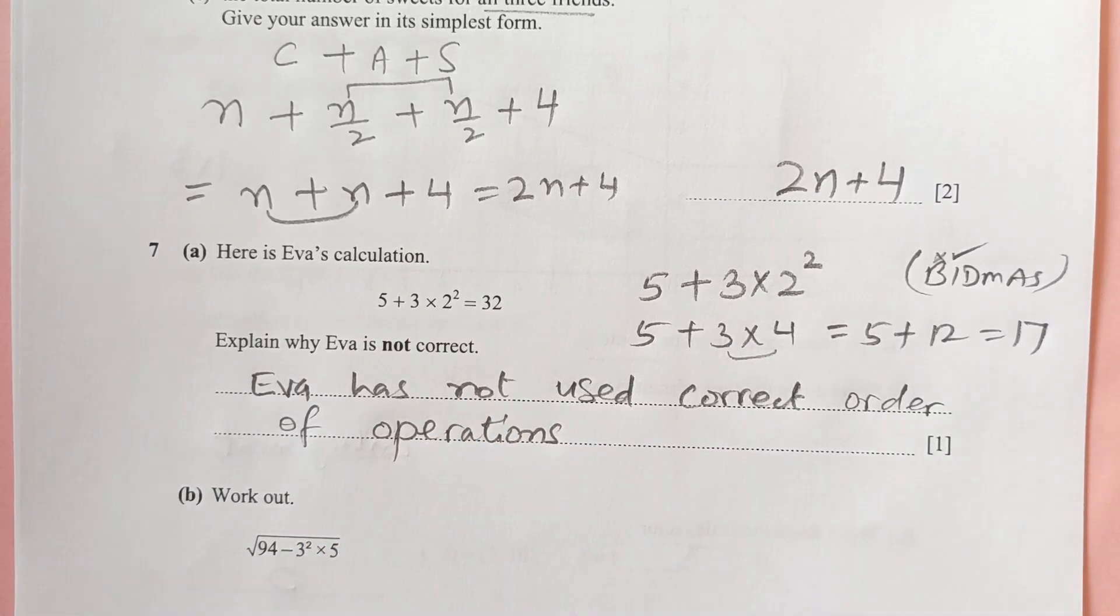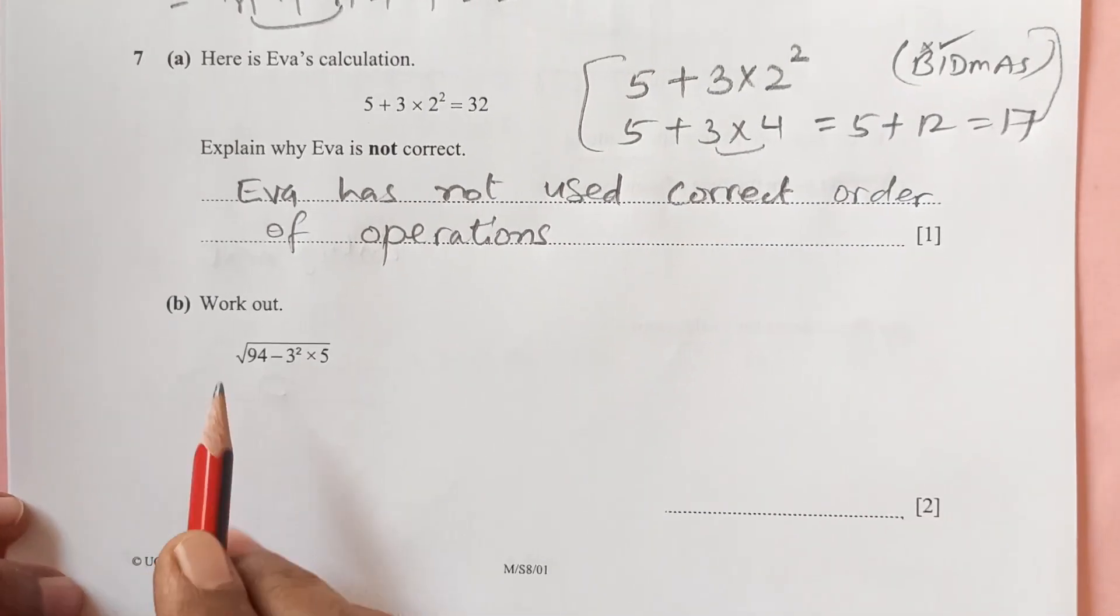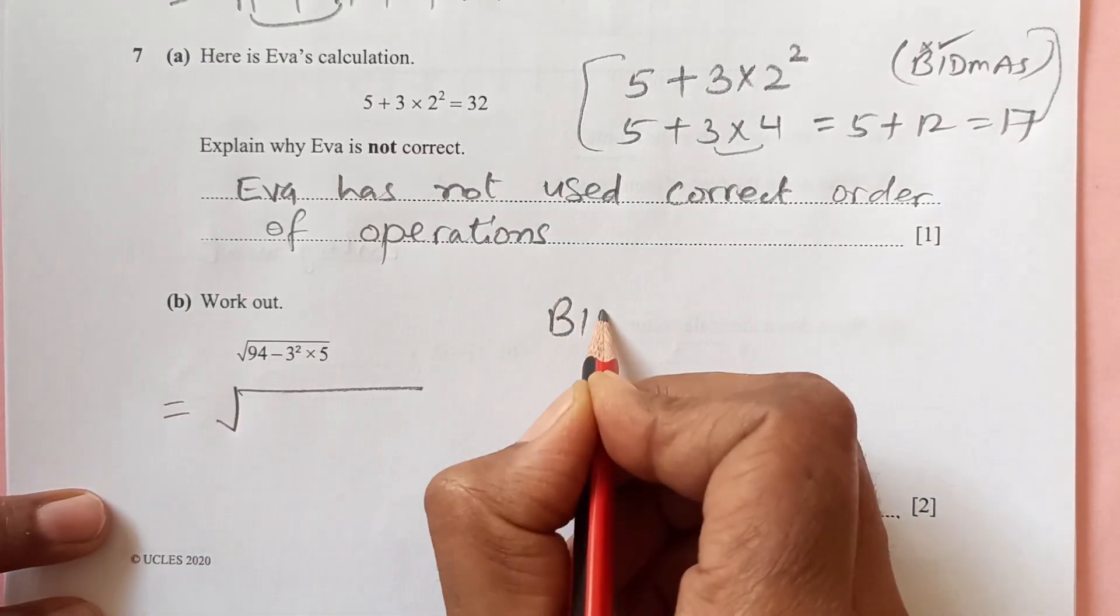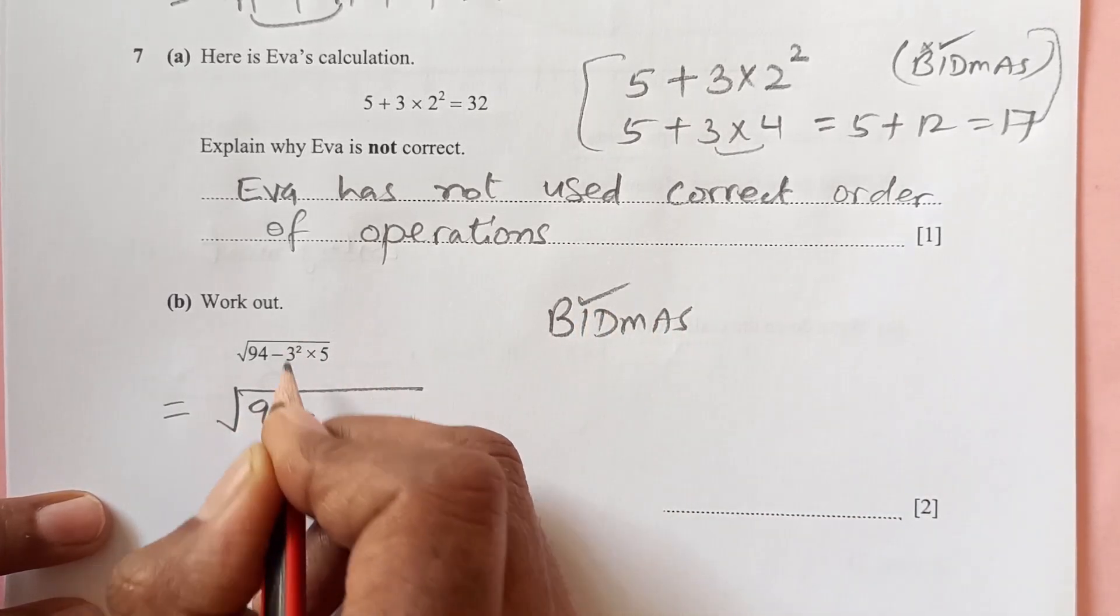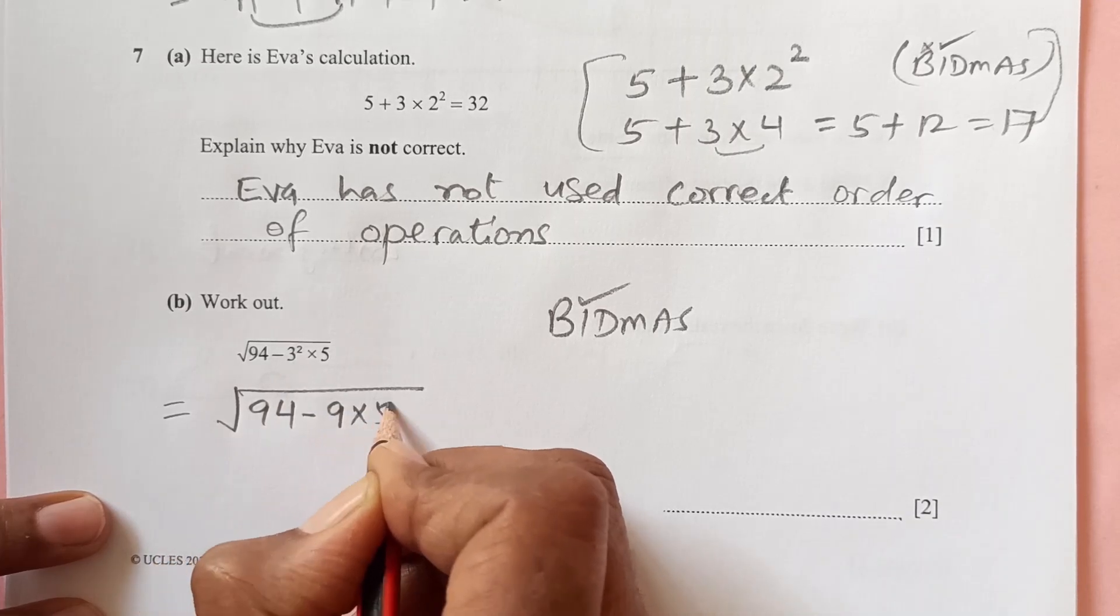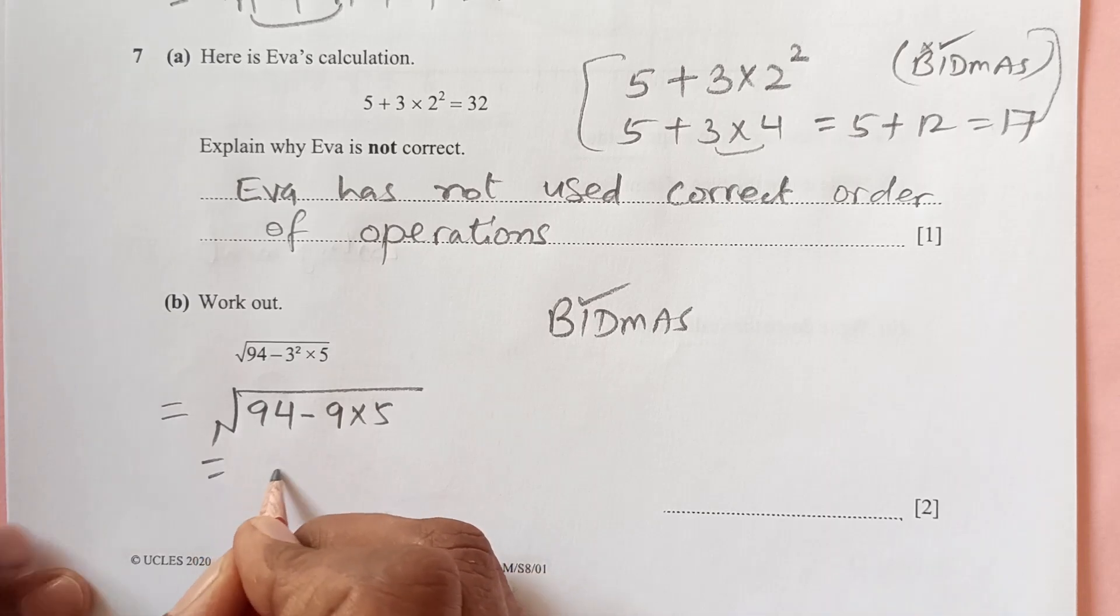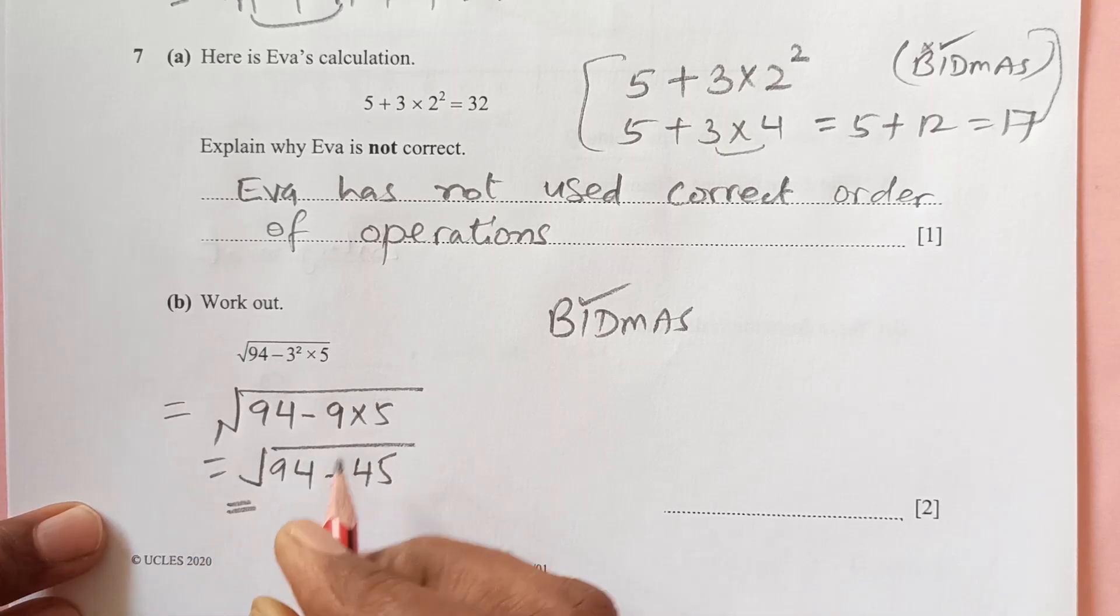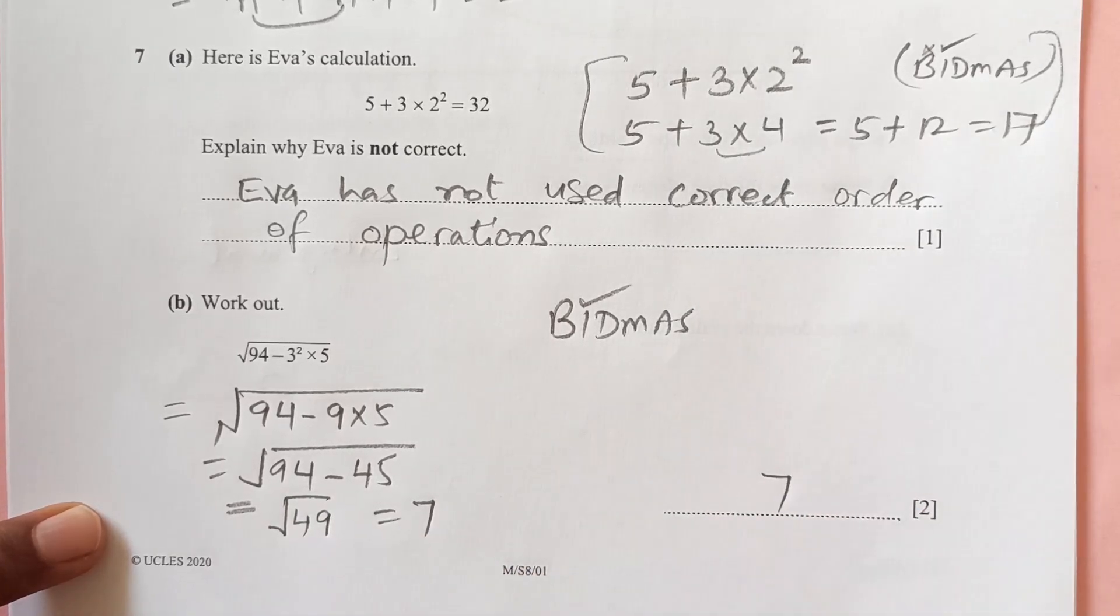Work out: square root. Again, we are going to use BIDMAS here, so indices first. 94 minus 3 squared is 9, times 5 is 45. So when you subtract it, 94 minus 45 is 49. Square root of 49 is 7, so our answer is 7.